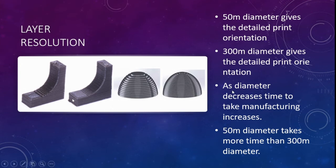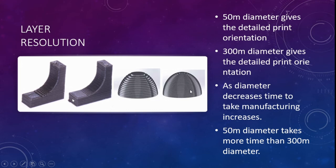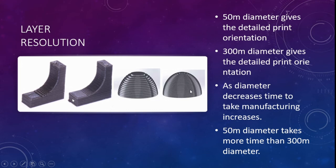As the nozzle diameter decreases, the manufacturing time increases — it needs to be more concentrated and precise. For example, if a larger object takes one hour to manufacture, a finer diameter setting on a similar object could take approximately three to four hours.